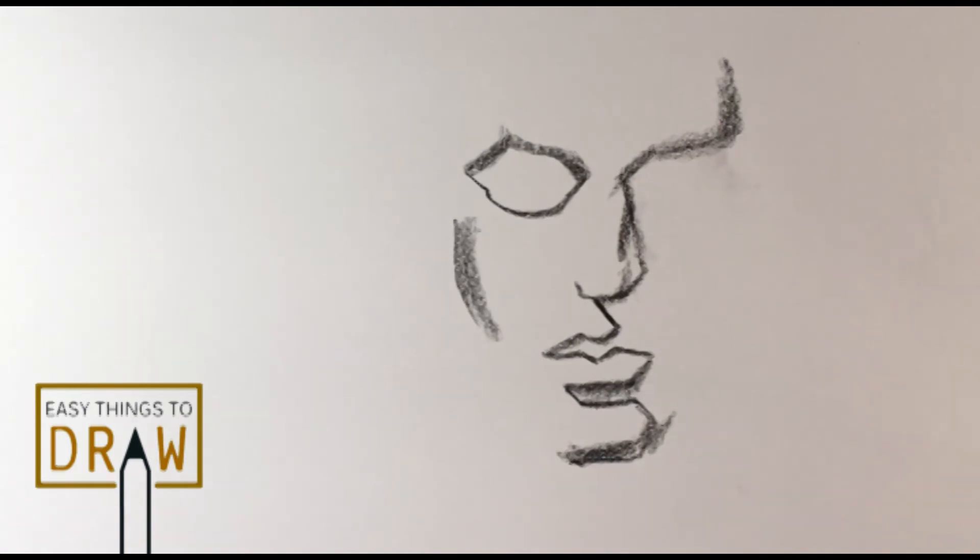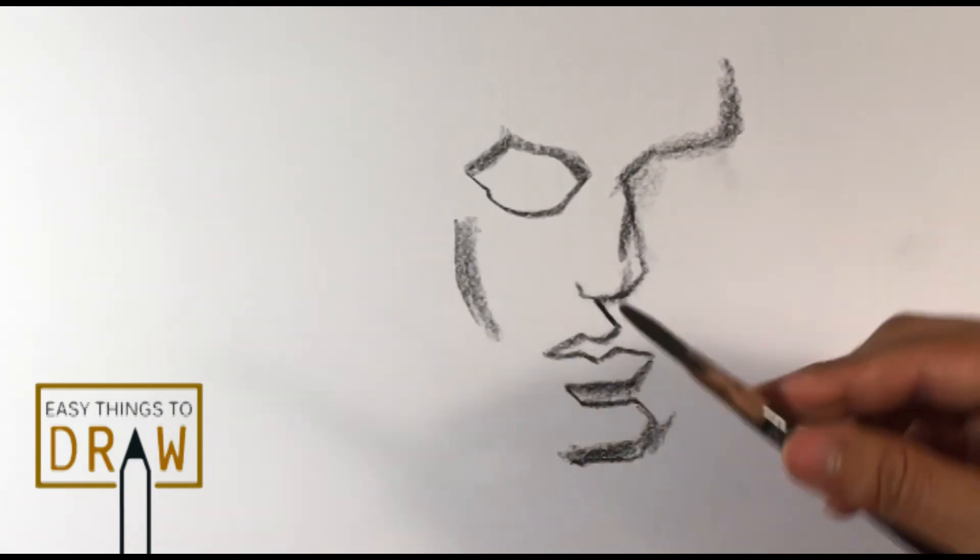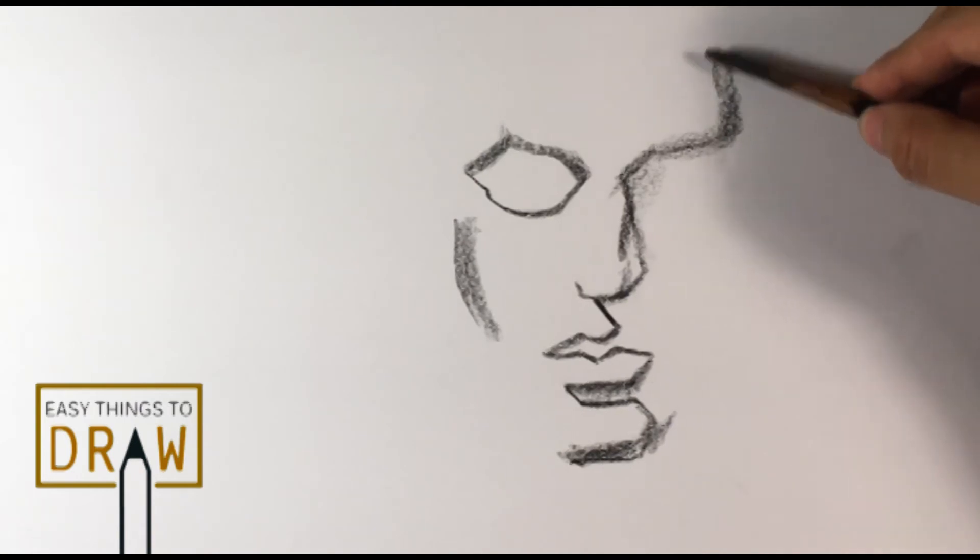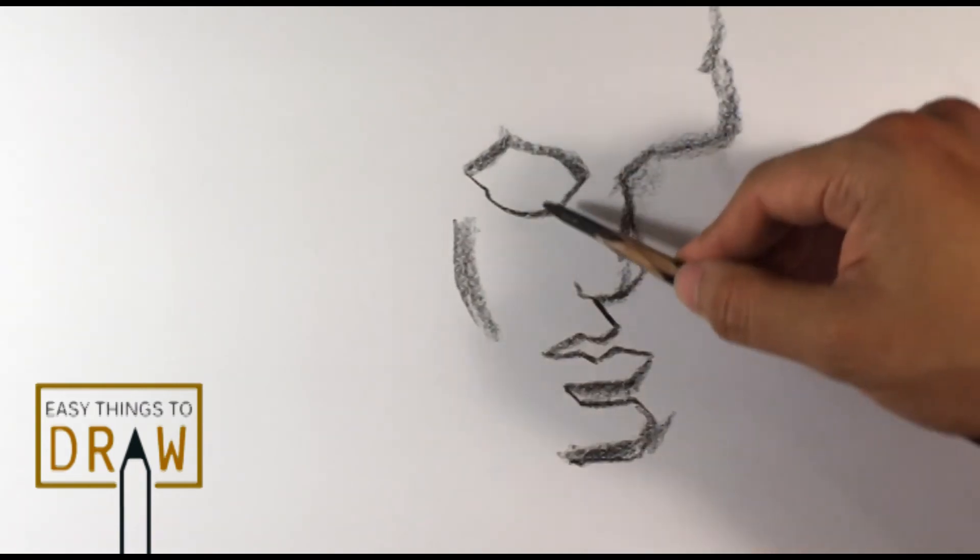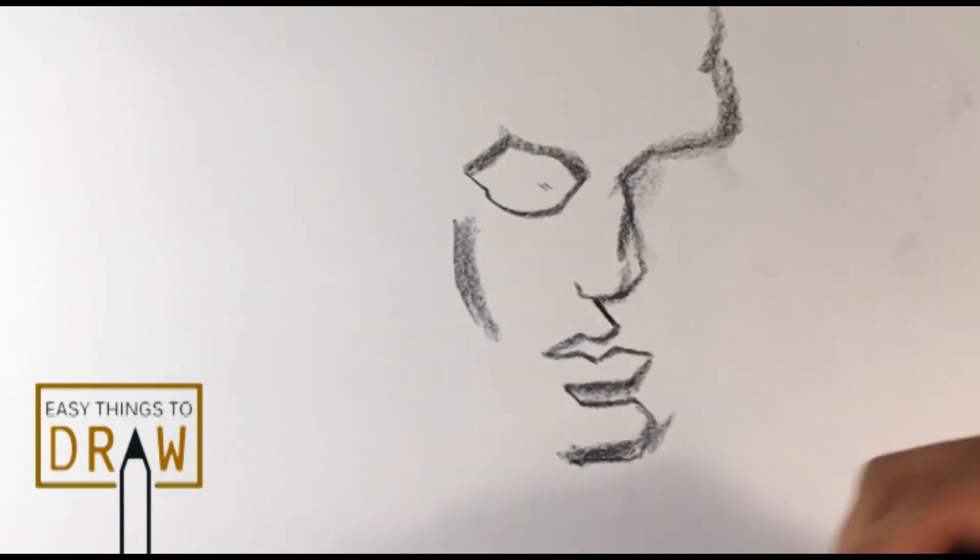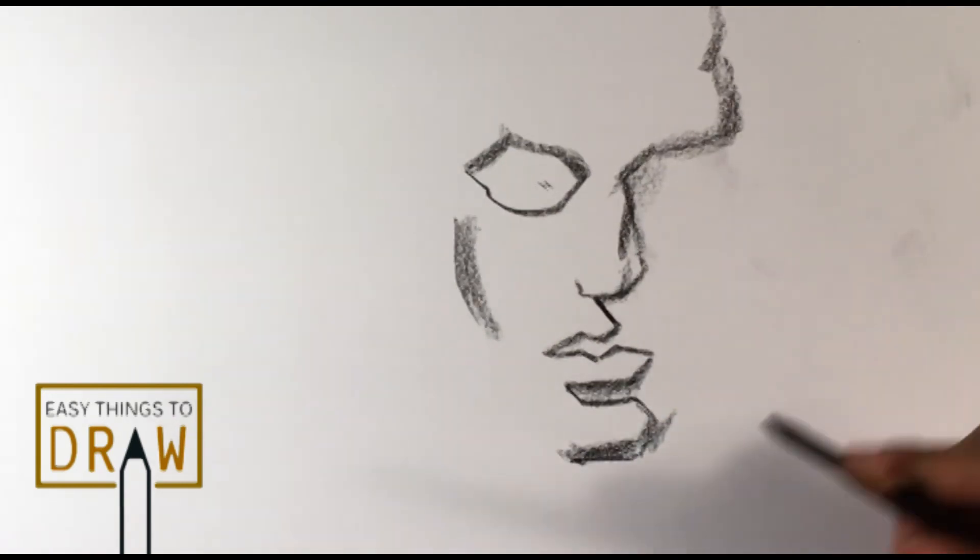But anyways, do you understand how that works? Obviously I'm just building in the edges. But you can start building in the edges of something and then kind of find the features within it later. But that's kind of how I'm applying it. This is all over the face. Soft, hard, whatever.